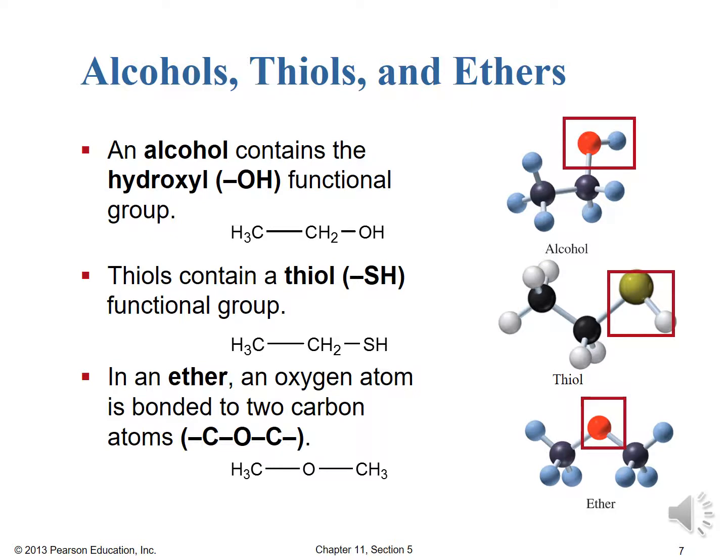Moving on, we've got alcohols, thiols, and ethers. Alcohol contains the hydroxyl — the OH functional group. Thiols contain the thiol SH functional group. And then an ether has the oxygen bridging two carbon groups. Alcohols and thiols are terminal functional groups, whereas an ether has to be within carbon groups on either side of that bridging oxygen.